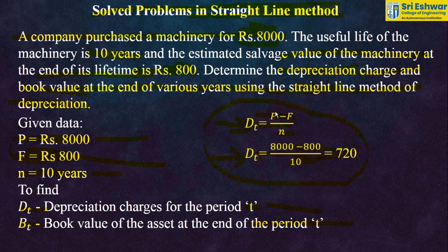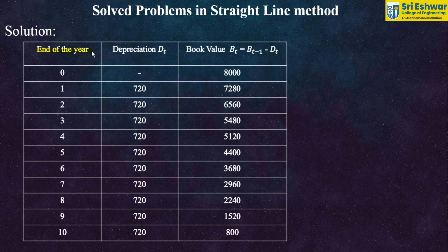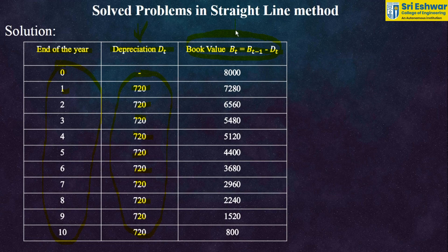Substituting the values, Dt = (8000 − 800) / 10 = 720. So the depreciation per year is rupees 720. The rate of depreciation is 9%. We have a table with columns: end of year, depreciation, and book value, starting from year zero up to 10 years. The depreciation Dt = 720 is common for all 10 years.